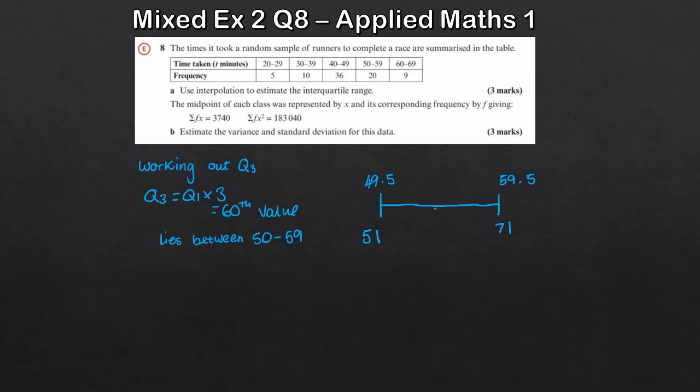Now we want the 60th, so that's 9 more, slap bang in the middle here. That would be a 60. So all we need to know is out the distance from 51 to 60, 51 to 71. And then, 49.5 to 59.5. So what we get here, 9 over 20, so times this is 10. So x.